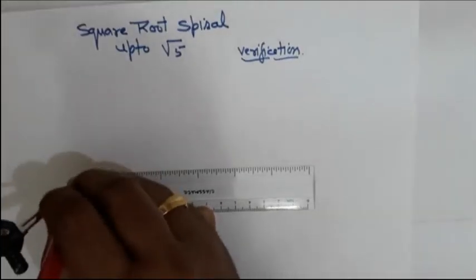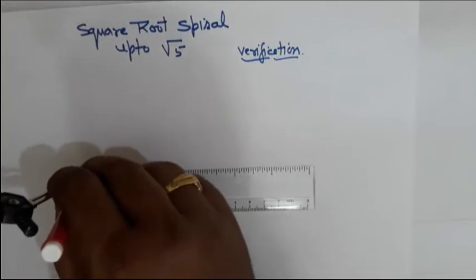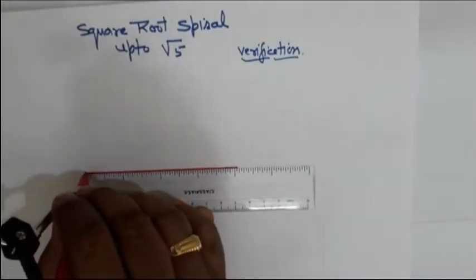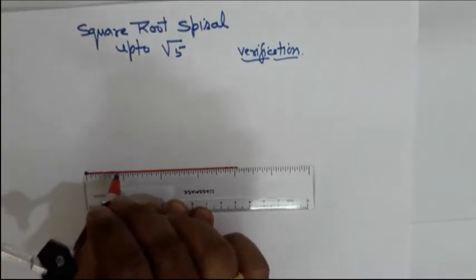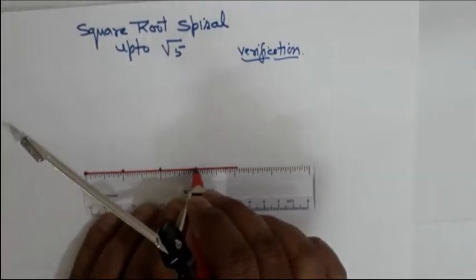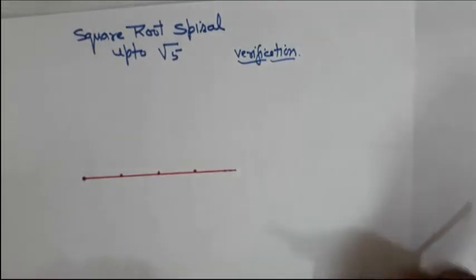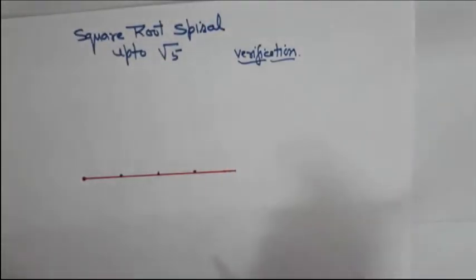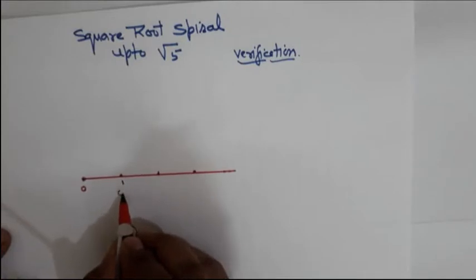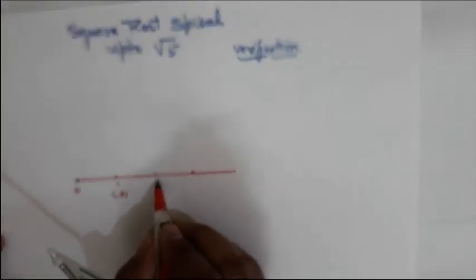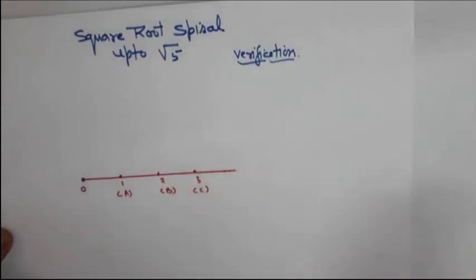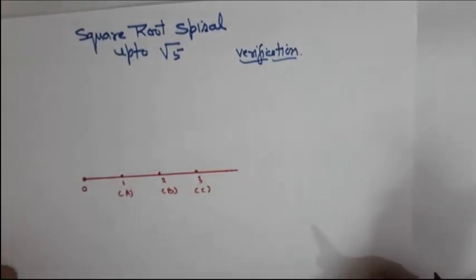First step: make a straight line using the inch scale. Here is the start point, which will be the origin O. Then mark points at one inch, two inches, three inches along the line. Let the starting point be A, the one-inch point be A, the two-inch point be B, and the three-inch point be C. So the first step is complete — make the straight line with the inch scale.